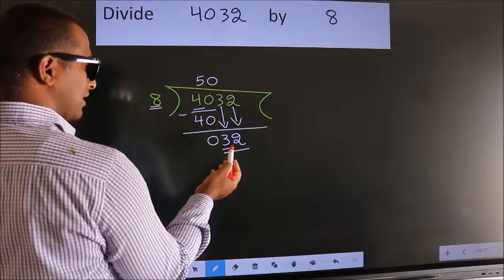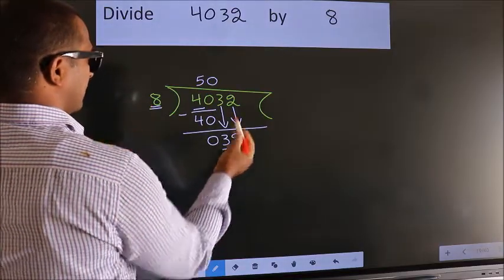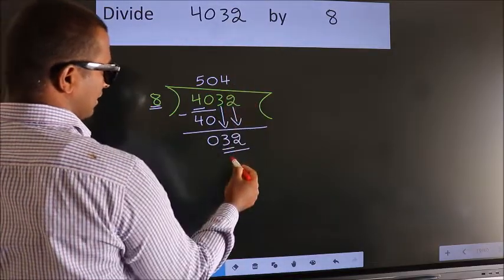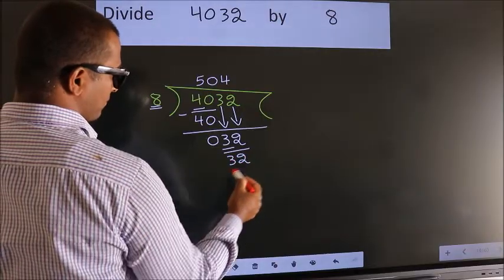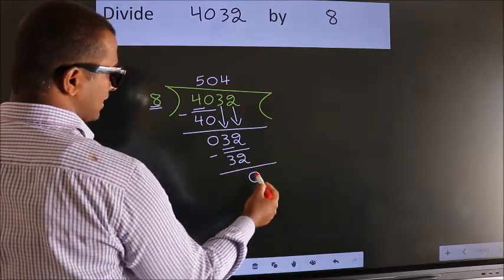When do we get 32 in the 8 table? 8 fours 32. Now we subtract, we get 0.